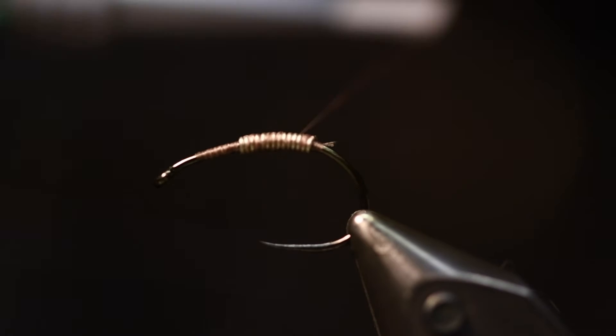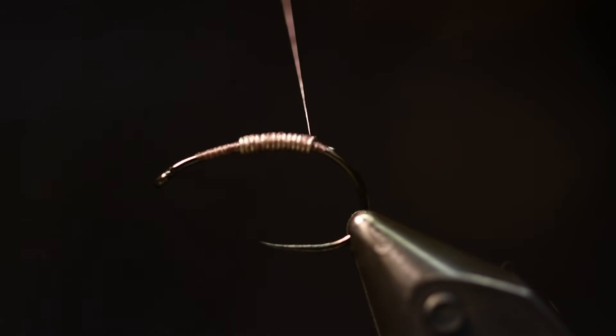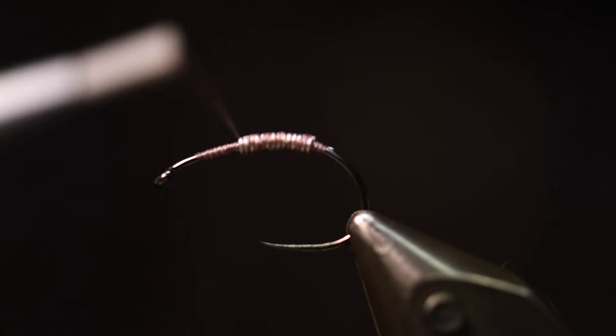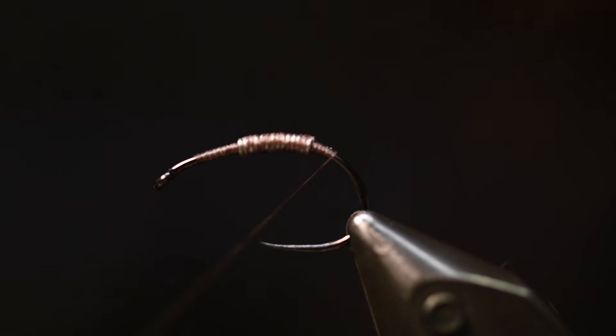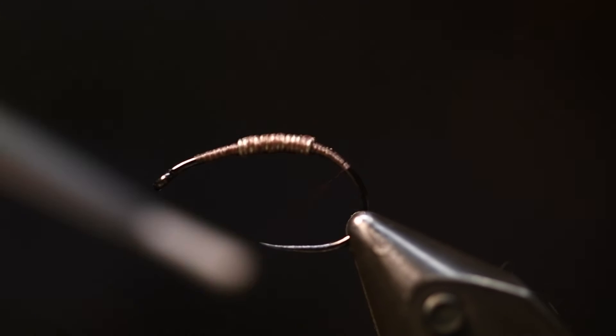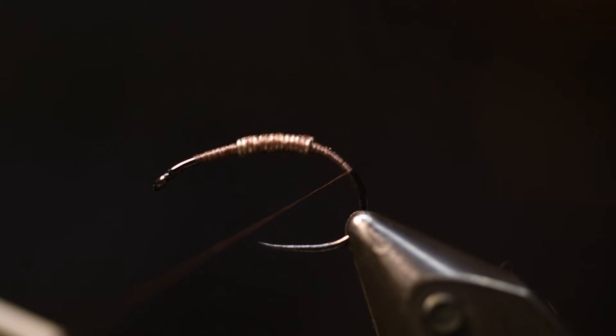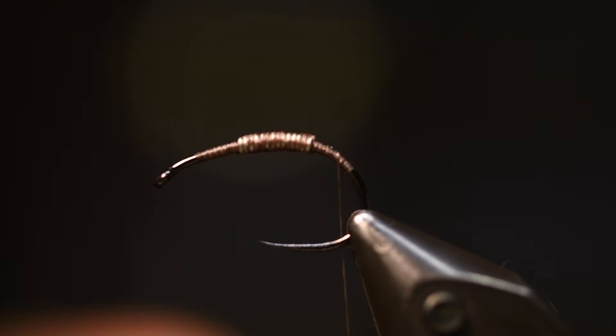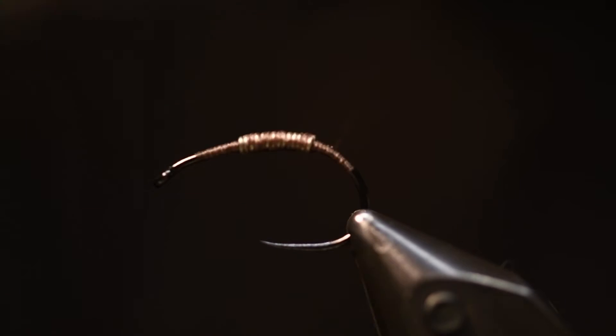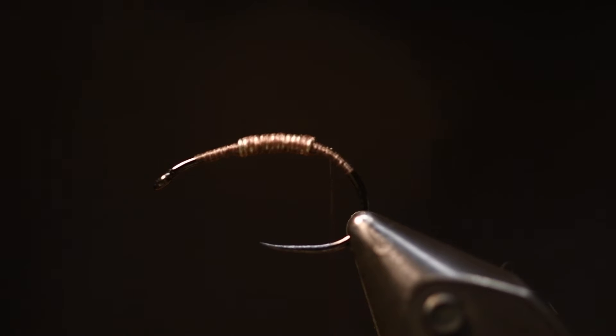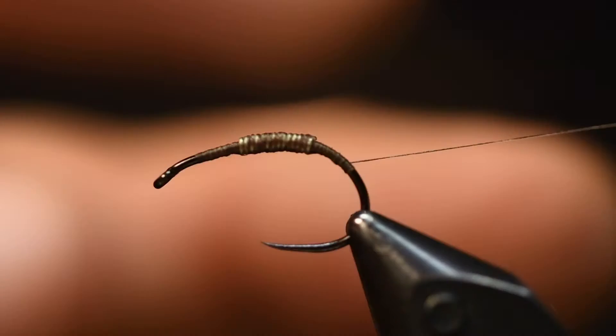I tie this in and try to get a little bit of thread over this lead wire so when I dub this, the dubbing won't sink into the lead. Now I just put this here because that will be the ribbing later.